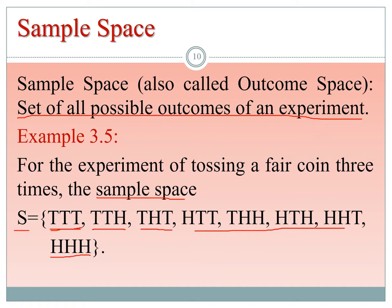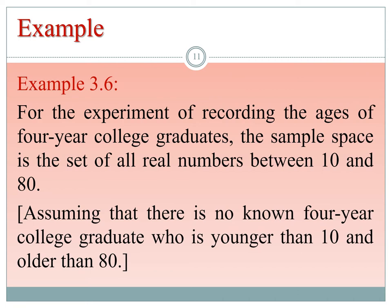For the experiment of recording the ages of four-year college graduates, the sample space is the set of all real numbers between 10 and 80. This assumes there is no known four-year college graduate younger than 10 or older than 80, so the sample space contains values 11, 12, 13, 14, up to 79.